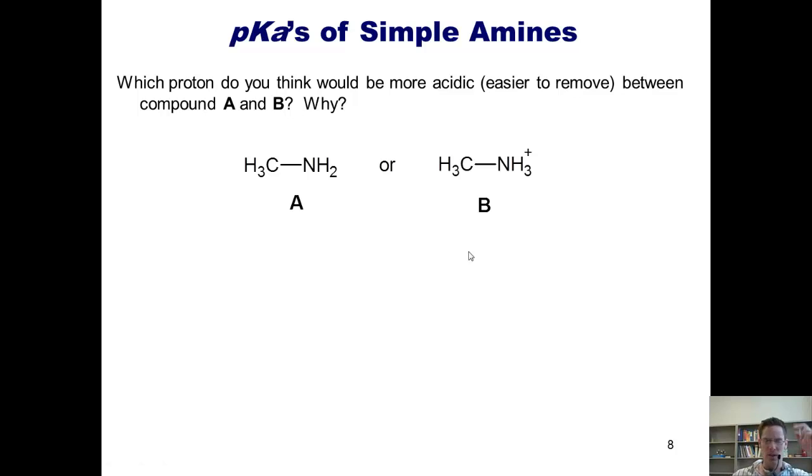I'll now introduce you to the general amine pKa values by asking the following question. Which proton do you think would be more acidic, or that is, easier to remove between compounds A and B? So I've got compound A that's completely neutral. And compound B, where my nitrogen has been protonated with one extra proton, so it's got a positive charge. Which of these two protons would you think would be more reactive or more acidic? Once you come up with your answer to that question, I want you to answer the question, why? If you wish, you can pause the video right now to answer this question for yourself before moving forward.